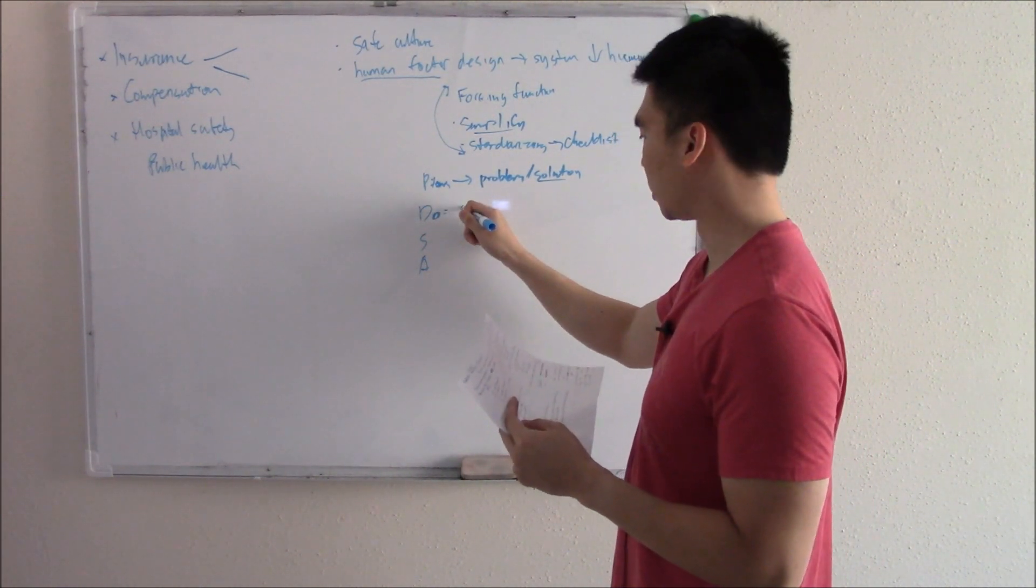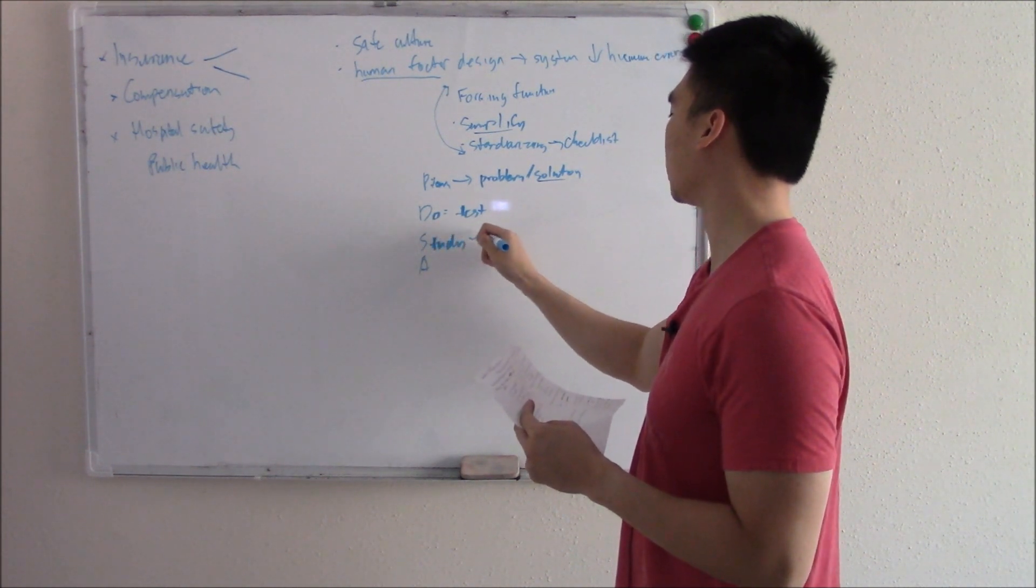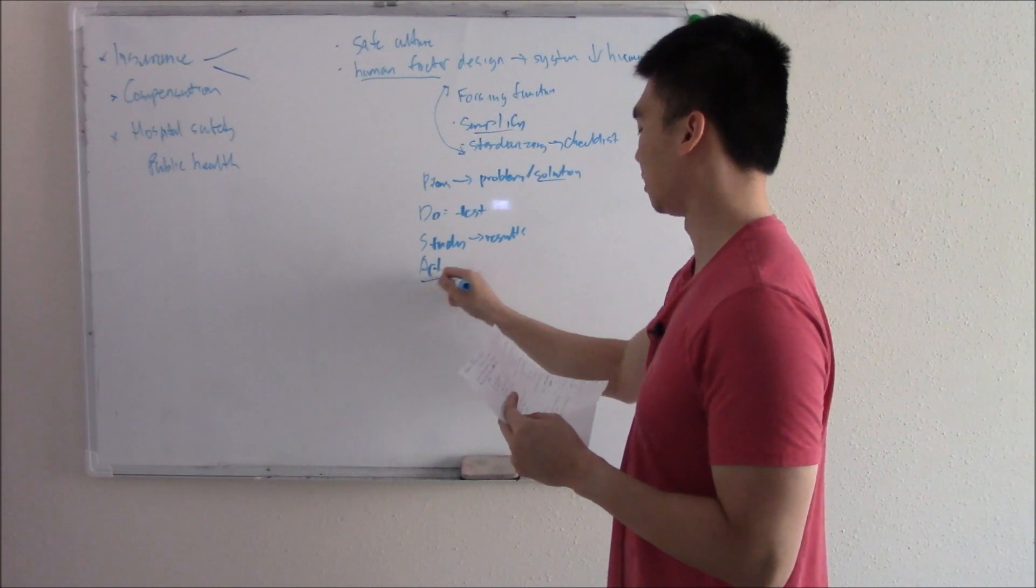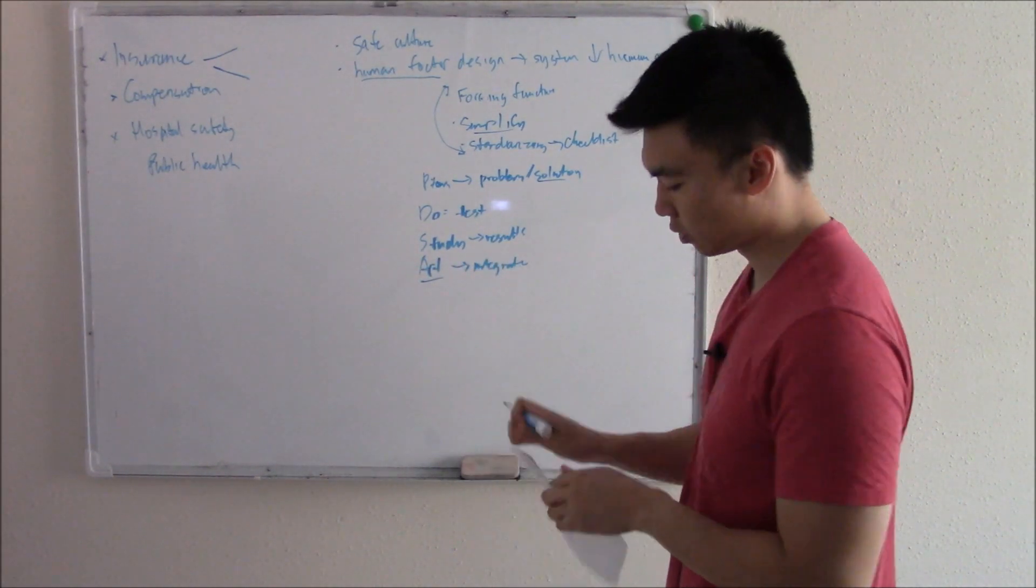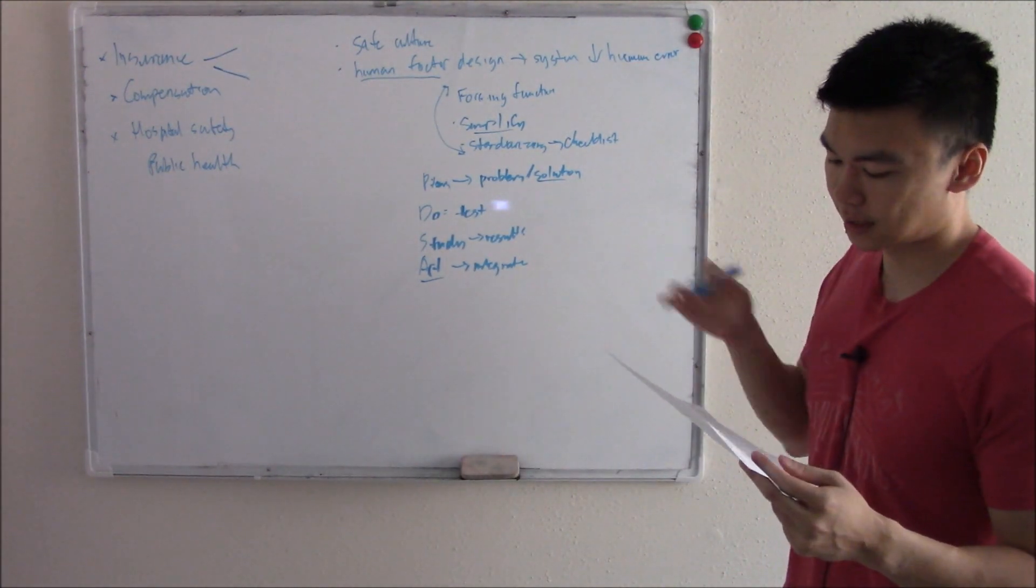So D stands for do. You test it. You implement it. S stands for study. Study the results. And if it is promising, then we act on it. We integrate it. So we just study the results set. You know what? This is better than paper charts. Let's do electronic charts. That's a PDSA cycle.